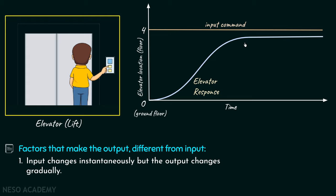The similar thing happens with any control system. Whenever we apply any input command, the input is instantaneous in nature — the desired response is instantaneous. But the output of any control system is gradual in nature because the control system has to do some work in order to generate that output, and that's why the actual response is quite different from the input.